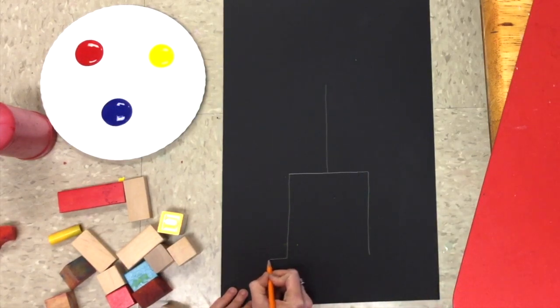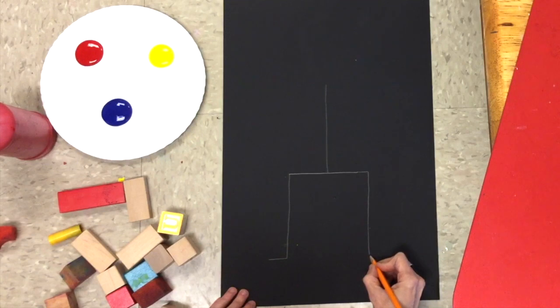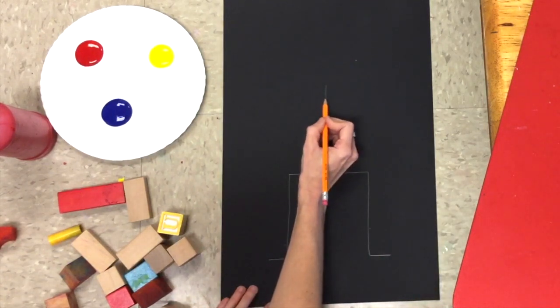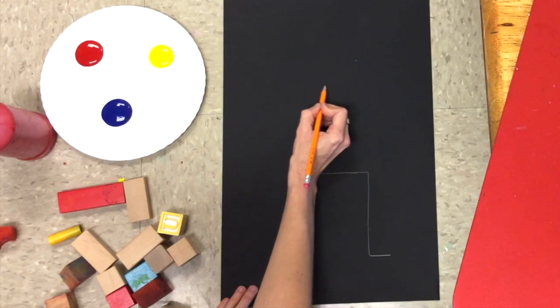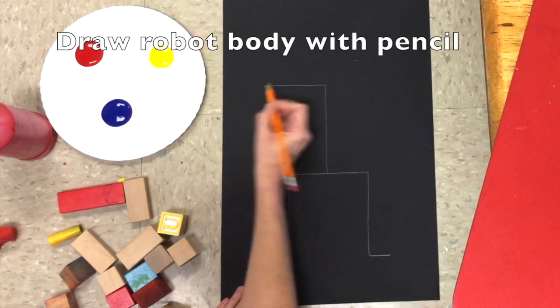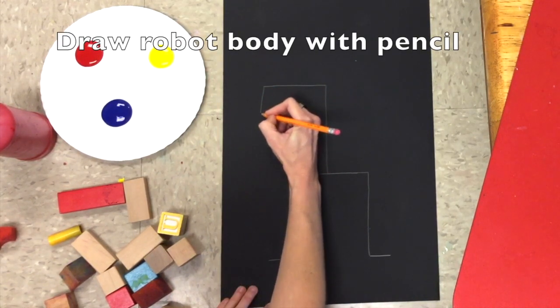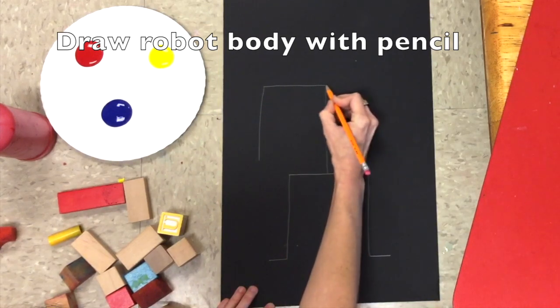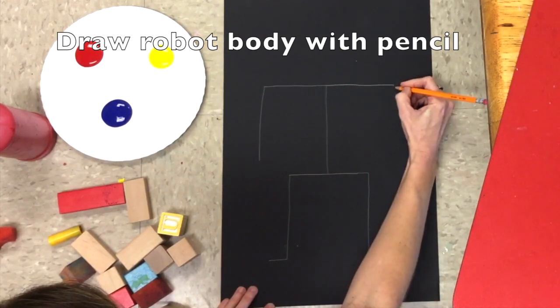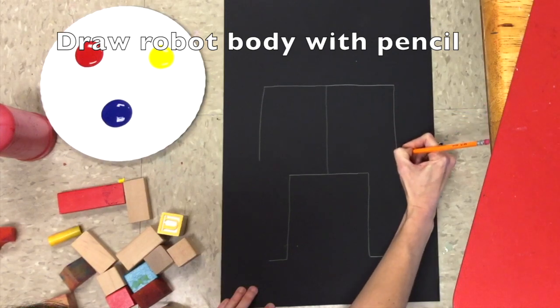Two little feet. One, two. What else do you think he needs? Arms. So I'm going to draw a straight line down. This is going to be his arm. And then another straight line on the other side. And then a vertical line that goes down.